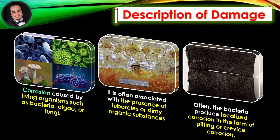Description of damage. Corrosion caused by living organisms such as bacteria, algae, or fungi. It is often associated with the presence of tubercles or slimy organic substances. Often the bacteria produce localized corrosion in the form of pitting or crevice corrosion.